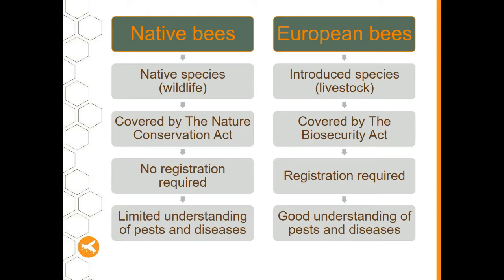We have a fairly limited understanding of the pests and diseases of our native bees, though we'll find out some interesting things tonight. European bees, on the other hand, we do have a pretty good understanding of their pests and diseases and how to manage them. There are some species that impact both European and native bees — including the small hive beetle, native hive beetles, ants, bee eaters, and cane toads — and possibly many exotic pests we don't have yet.